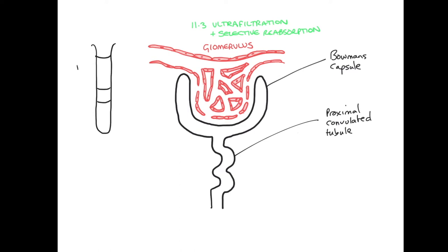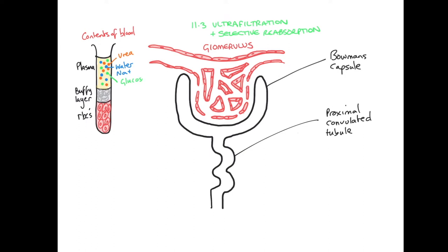Ultrafiltration. We'll start by thinking about what's inside the blood. Plasma is a liquid and has stuff dissolved in it. The buffy layer is white blood cells and platelets, and the red blood cells are those cells that carry oxygen around your body. So in the plasma you've got urea, water, sodium, glucose, and amino acids.